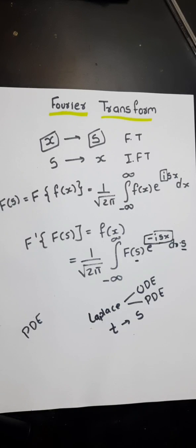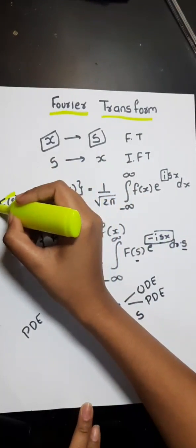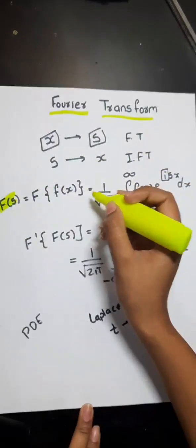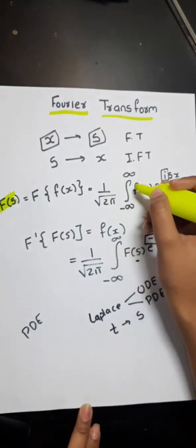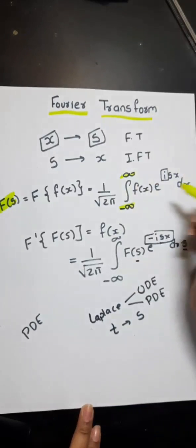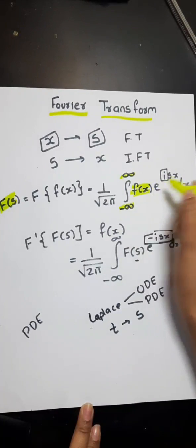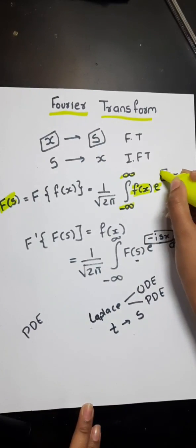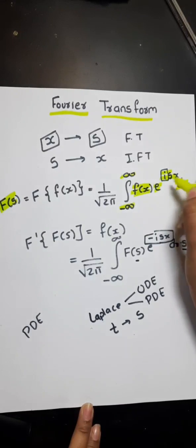Let us see the formulas, basic formulas of Fourier transform. The basic formula of Fourier transform is, we represent it like this: F of capital S is equal to 1 upon under root 2 pi from minus infinity to plus infinity, f of x, our function into e raised to power iota s x to dx.